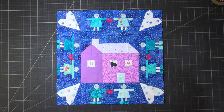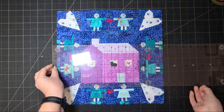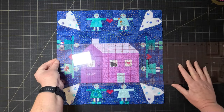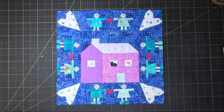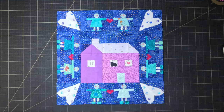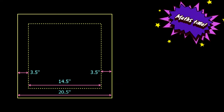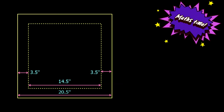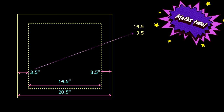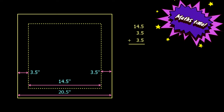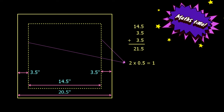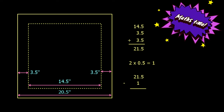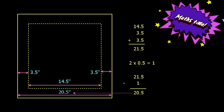The first thing I need to do is work out what width the border has to be. The block at the moment is 14 and a half inches wide and I want it to end up as 20 and a half, so that matches the first block — that means we're going to need a three and a half inch border on each side. Remember you're going to lose half an inch with every seam, so 14 and a half plus three and a half plus three and a half makes 21 and a half, but we subtract two lots of half inches — one for each side — leaving us with 20 and a half inches, exactly what we want.